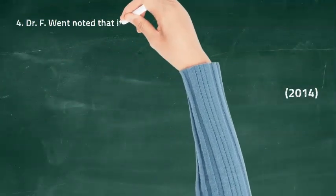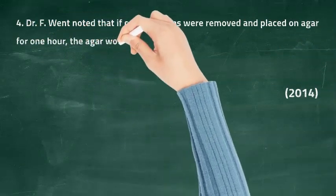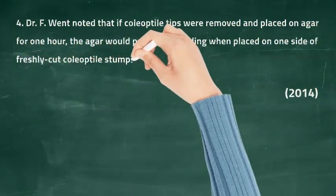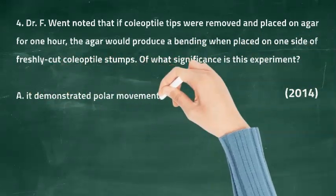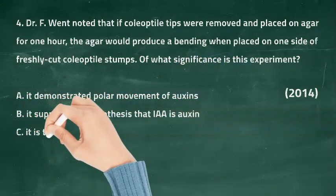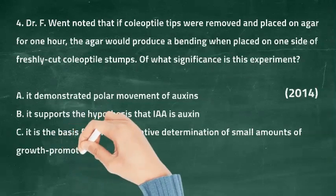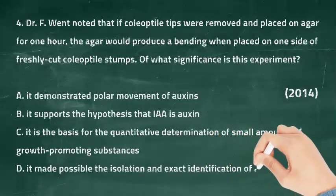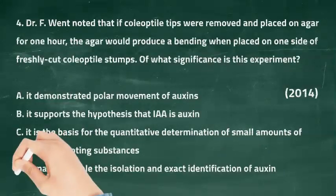Question four: Dr. Went noted that if coleoptile tips were removed and placed on agar for one hour, the agar would produce a bending when placed on one side of freshly cut coleoptile stumps. What is the significance of this experiment? Option A: it demonstrated polar movement of auxins. Option B: it supported the hypothesis that IAA is auxin. Option C: it is a basis for quantitative determination of small amounts of growth-promoting substances. Option D: it made possible the isolation and exact identification of auxins.